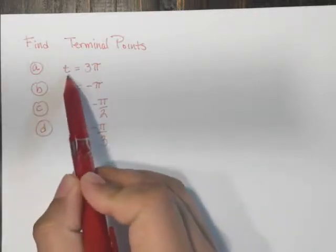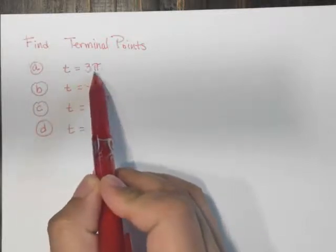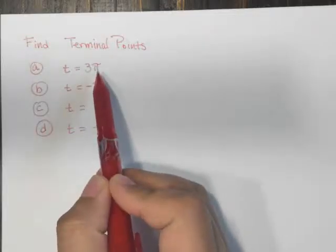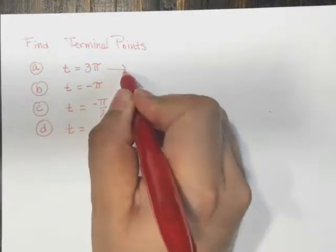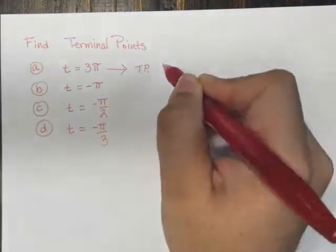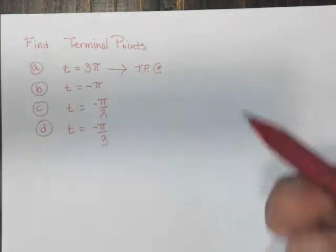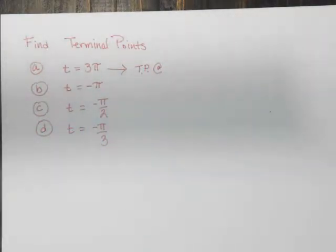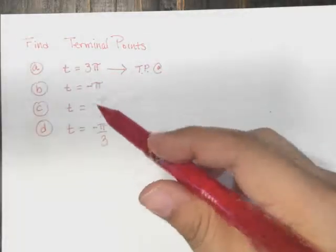So we've got, in the first example, the terminal point at t equals 3π. So all they want to know is what point does this angle end at. And when we say point, we're talking about an x and y coordinate. So what we're going to do is we're going to make use of the unit circle. And notice all of these are in radians.